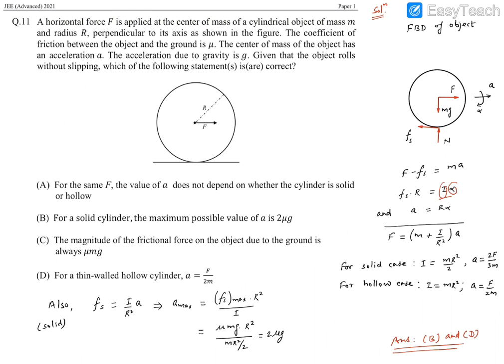This becomes I/R² times R α. Since R α is a, it's I/R² times a, which equals ma. Now we can add these two equations. F cancels out, so F equals (m + I/R²) times a.